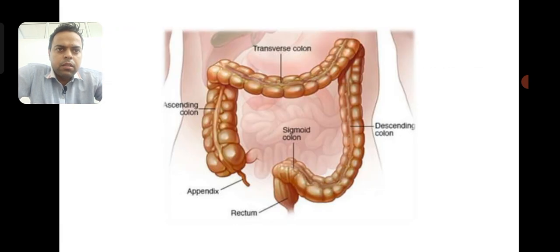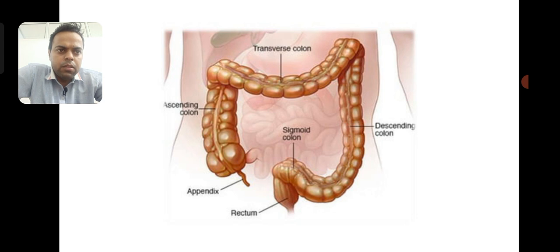Ulcerative Colitis starts in our colon — that is the transverse colon, ascending colon, which is the large intestine — as well as the appendix, rectum, and descending colon. These are the parts in which ulcerative colitis may occur.